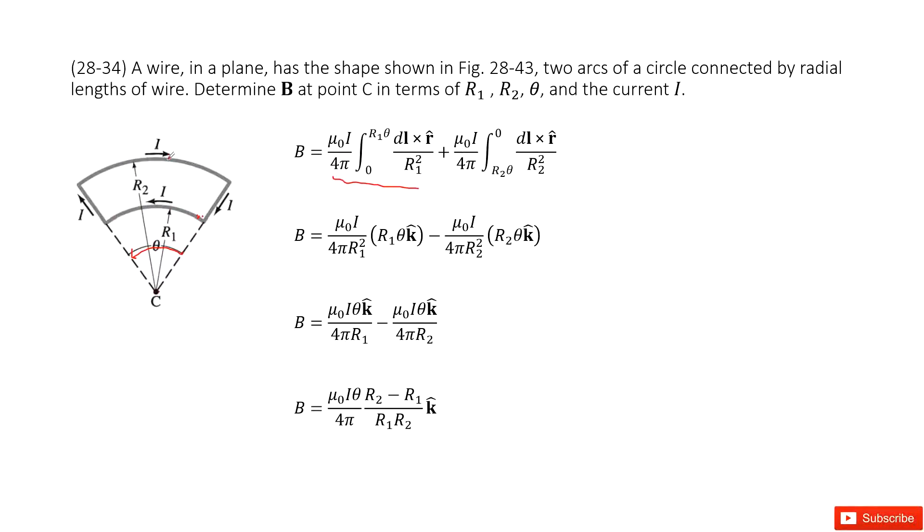And then we look at the second arc. This arc has radius R2. So we still use Biot-Savart law, R2 squared and DL cross R, and this arc's length becomes R2 theta. The corner goes this way so it becomes integral from R2 theta to zero.